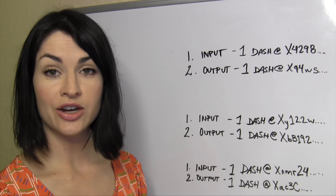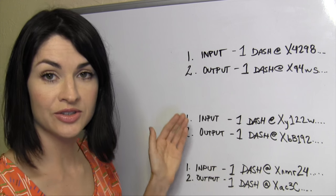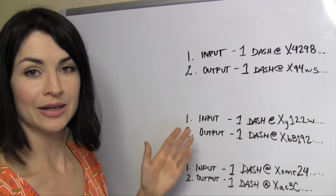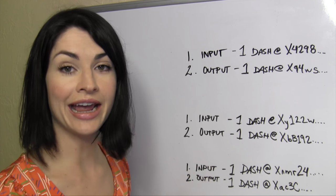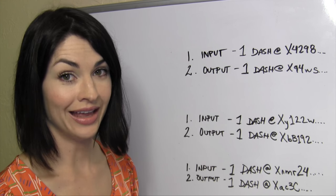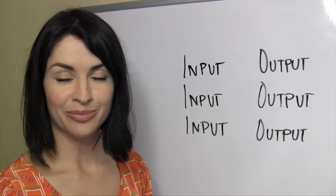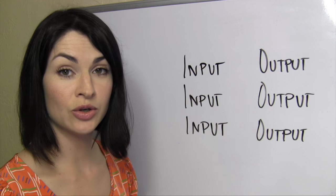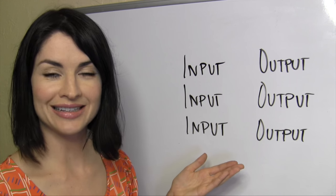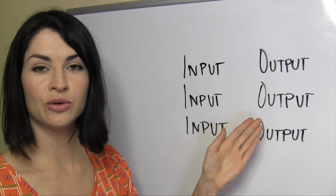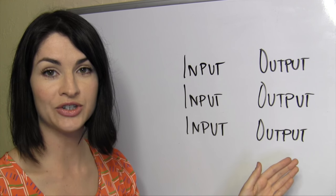The masternode then checks that all of these requests are legitimate, basically that the inputs are not already spent, and that this setup is indeed a spendable transaction. And if it is, the masternode combines all of this data into a ready-to-send transaction, that is, one dash, one dash, and one dash, ending up in new addresses. One dash, one dash, and one dash.